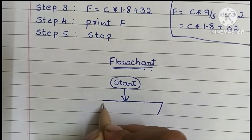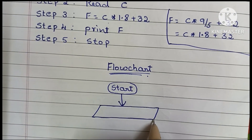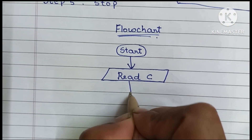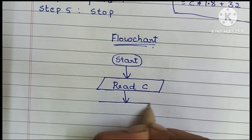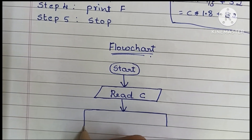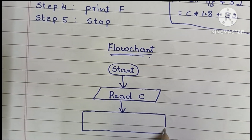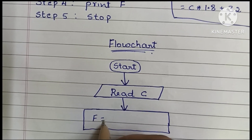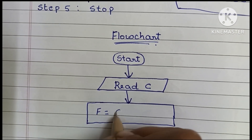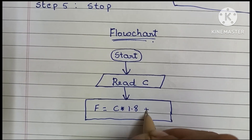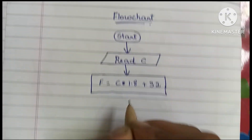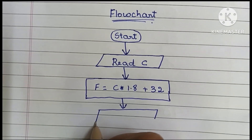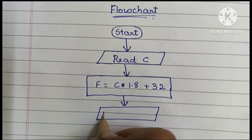Next we have to read the input value, so here we read C. Next, we calculate the Fahrenheit value. Calculation is always done within a rectangular shape, so we draw a rectangle and write F = C × 1.8 + 32.